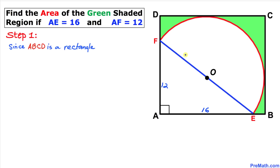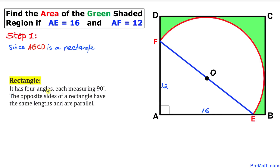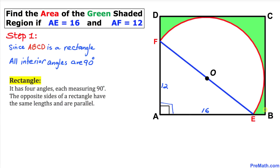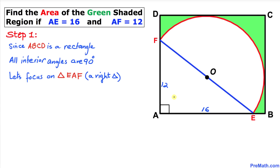Rectangle ABCD has four angles each measuring 90 degrees, and its opposite sides have the same lengths and are parallel. So all interior angles of this rectangle are 90 degrees each. Now let's focus on right triangle EAF, which represents a 3-4-5 right triangle.